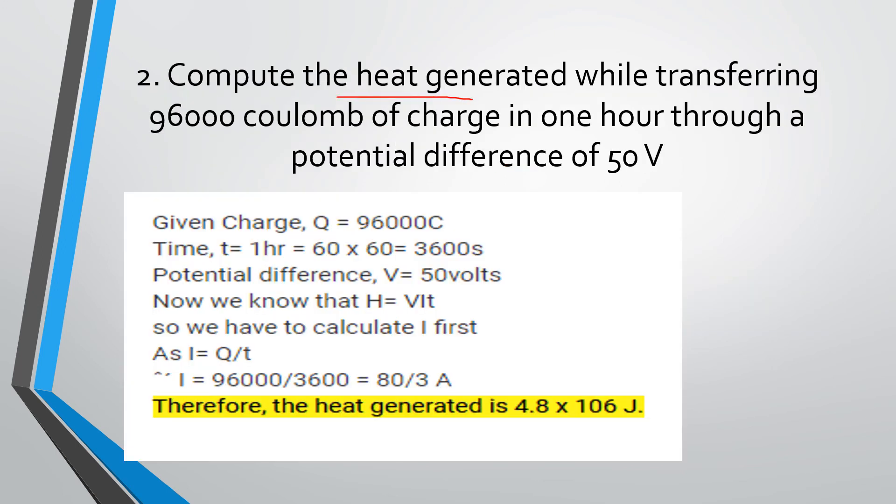Compute the heat generated while transferring 96,000 coulombs of charge in 1 hour through a potential difference of 50 volts. Given charge Q equals 96,000 coulombs, time T equals 1 hour equals 60 times 60 equals 3600 seconds, potential difference V equals 50 volts. We know that H equals VIT, so we have to calculate I first. As I equals Q by T, I equals 96,000 divided by 3600 equals 80 by 3 amperes. Therefore, the heat generated is 4.8 times 10 to the power of 6 joules.